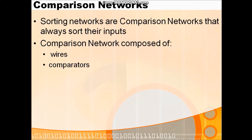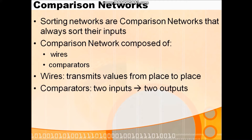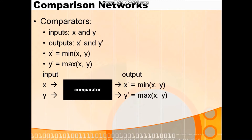The working is: first we have unsorted input, we apply that input to the comparator and get sorted output. The components of the sorting or comparison network are: first, the wire — it transmits the value from one place to another. Second is the comparator, which compares elements between two inputs and gives two sorted outputs. This is the pictorial representation of the comparison network or sorting network.